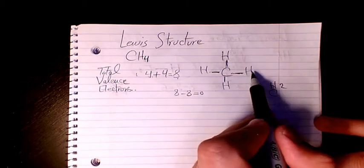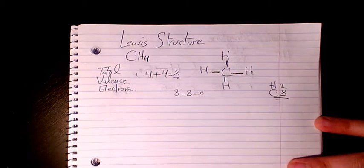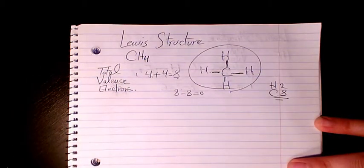For carbon: two, four, six, eight. That's valid too. So that's the Lewis structure of methane or CH4.